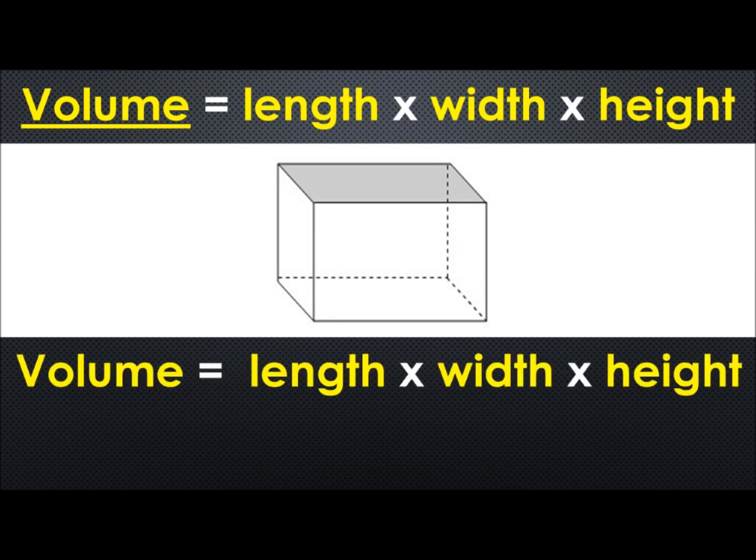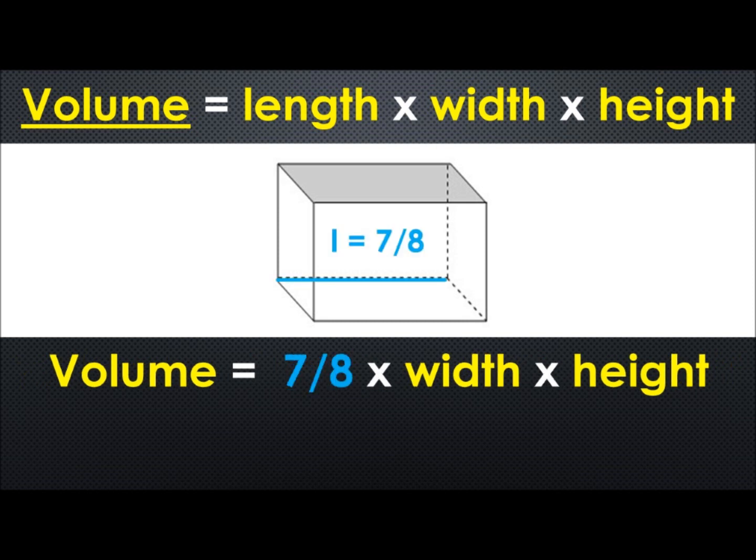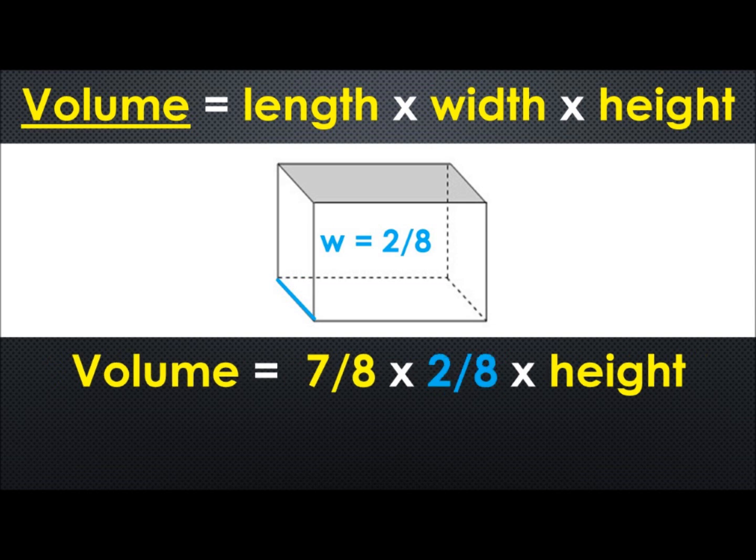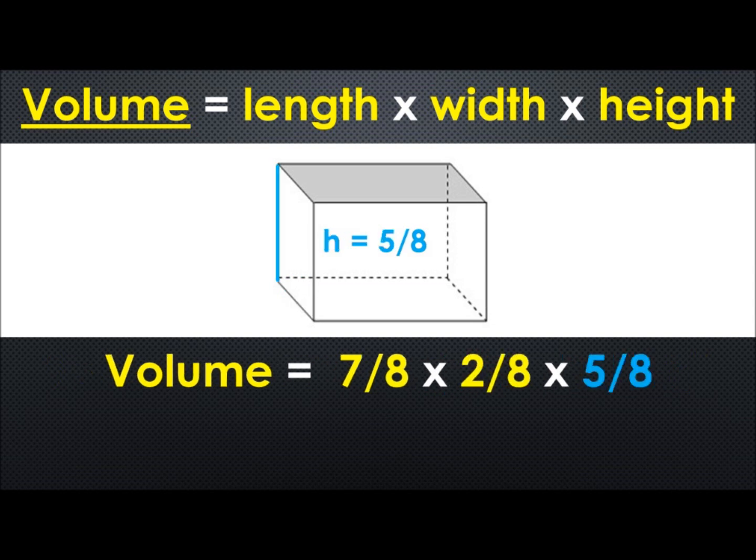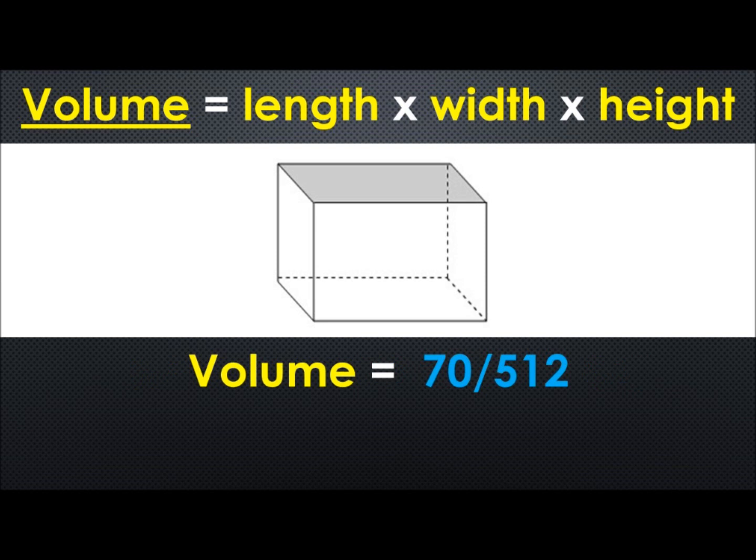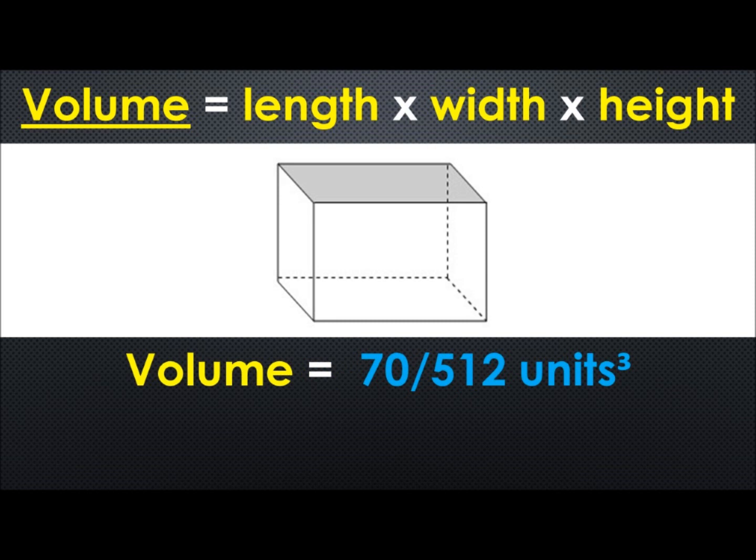Now let's try another example with fractions this time. We're going to let the length be 7 over 8. We're going to let the width be 2 over 8. And we're going to let the height be 5 over 8. So now we multiply those across and we have 70 over 512. And that's units cubed.